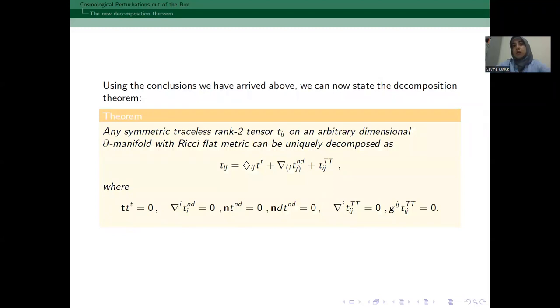So, the final result is that given a symmetric traceless rank-2 tensor, we can decompose it uniquely as this form. So, it has a scalar, vector and tensor, but all of these have to satisfy these conditions. So, the usual traceless tensor part is the same, but for the other parts, we have these boundary conditions.